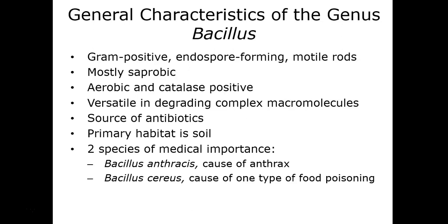The Bacillus group overall is gram-positive, forms endospores, and some are encapsulated — such as Bacillus anthracis, whose capsule is a primary virulence factor for avoiding phagocytosis by macrophages. These are aerobes or facultative anaerobes, and they can also produce antibiotics. We'll discuss two major species: Bacillus anthracis, causing anthrax, and Bacillus cereus, which produces an enterotoxin associated with food-borne intoxication.